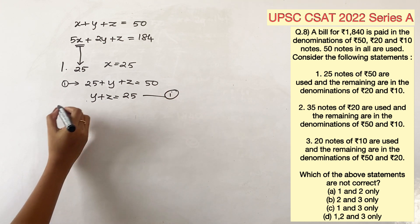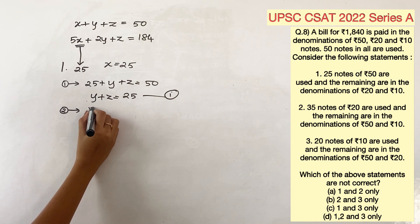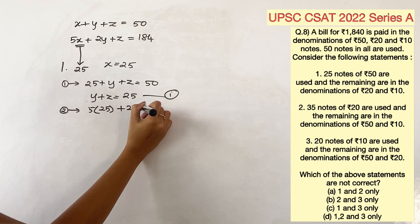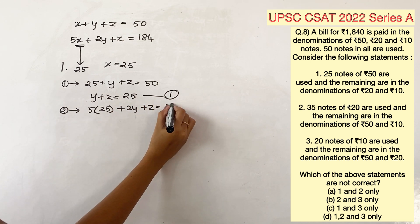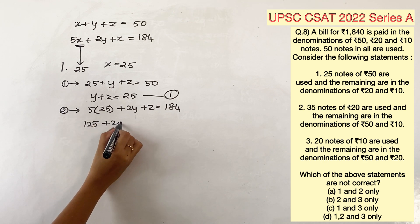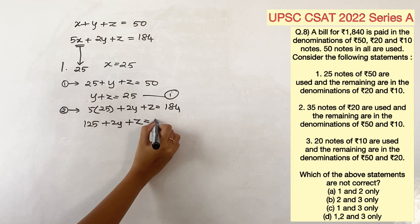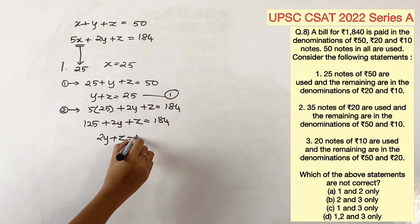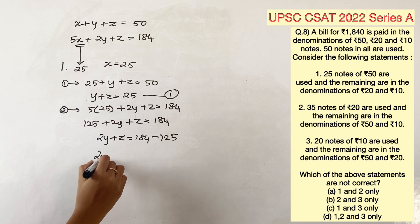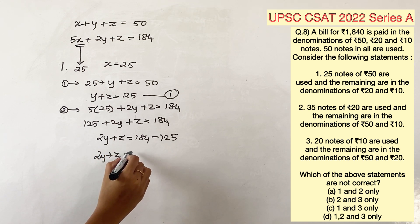Substituting in the next equation: 5 into 25 plus 2y plus z is equal to 184. Now, 5 into 25 is 125 plus 2y plus z is equal to 184. 2y plus z is equal to 184 minus 125. 2y plus z is equal to 59.